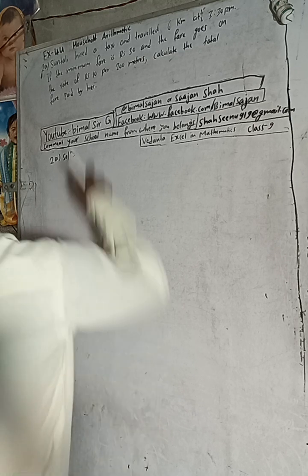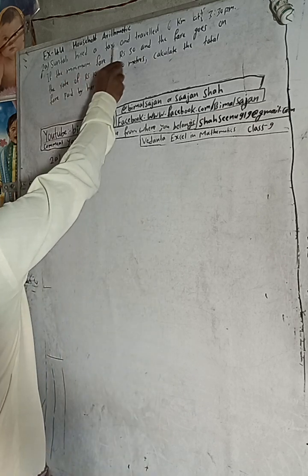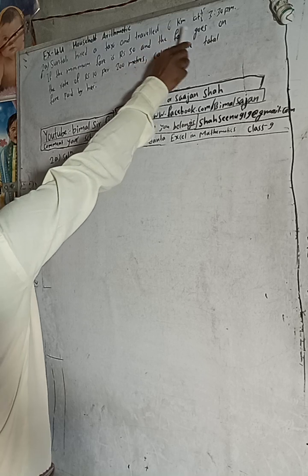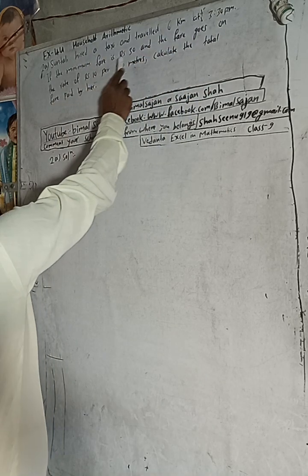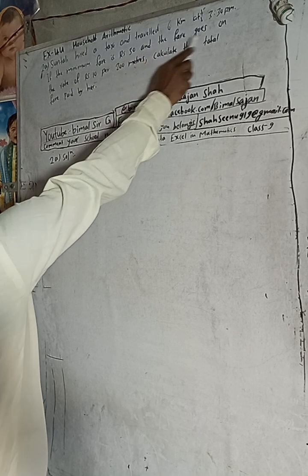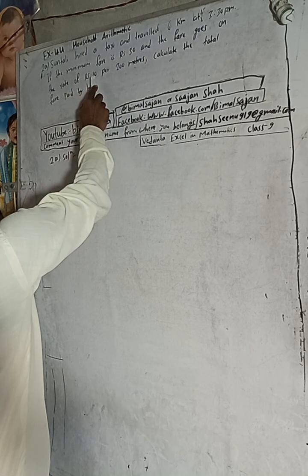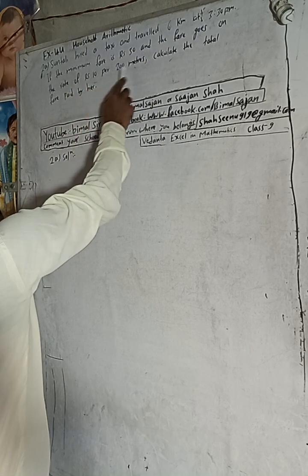Hi Class 9 and 10 students, welcome back to Bhimalsarji YouTube channel. This is question number 2a, Exercise 4.4, Household Arithmetic, Vedanta Excel in Mathematics Class 9. The question is: Suntali hired a taxi and traveled 6 kilometers at 3:30 PM. If the minimum fare is Rs 50 and the fare goes at the rate of Rs 10 per 200 meters.